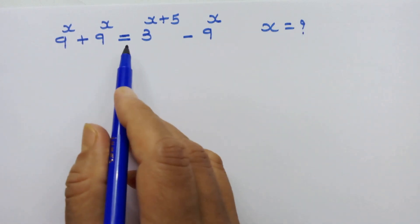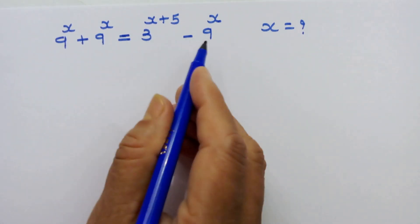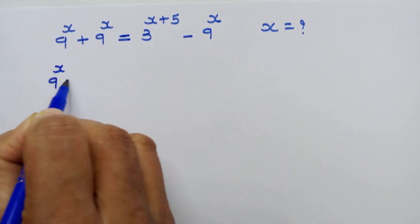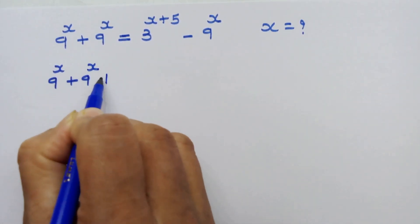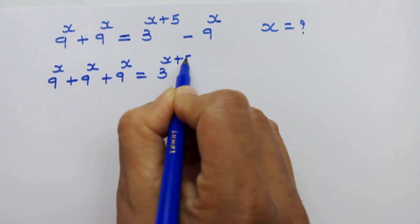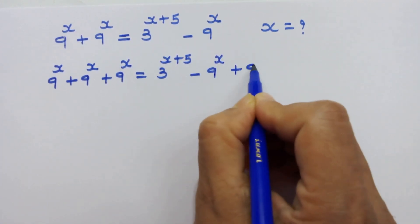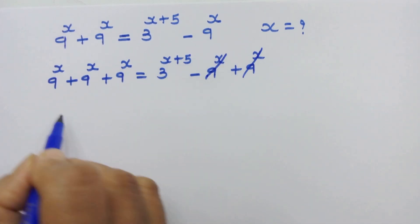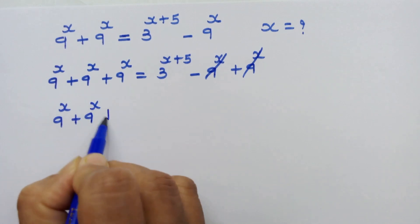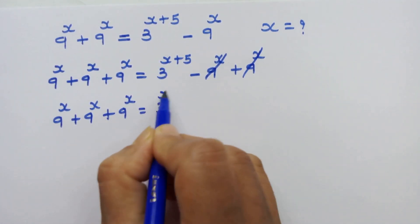It seems we can have the same base on both sides, and for that let's add 9 raised to x at both sides. So we can write: 9 raised to x plus 9 raised to x plus 9 raised to x is equal to 3 raised to x plus 5 minus 9 raised to x plus 9 raised to x. These will cancel, leaving 3 times 9 raised to x is equal to 3 raised to x plus 5.